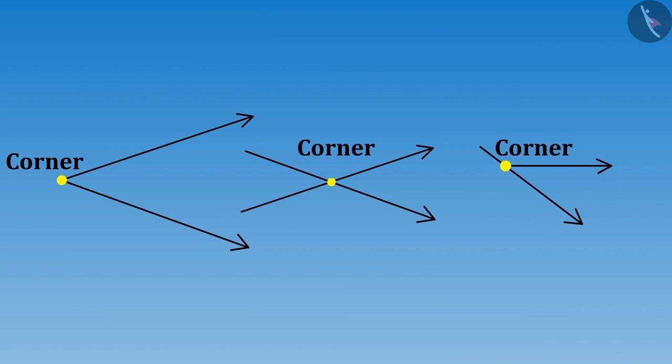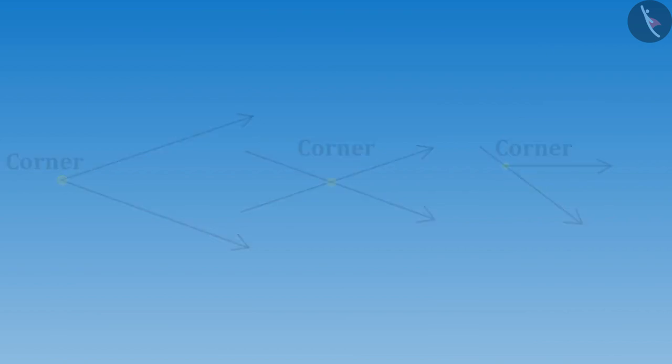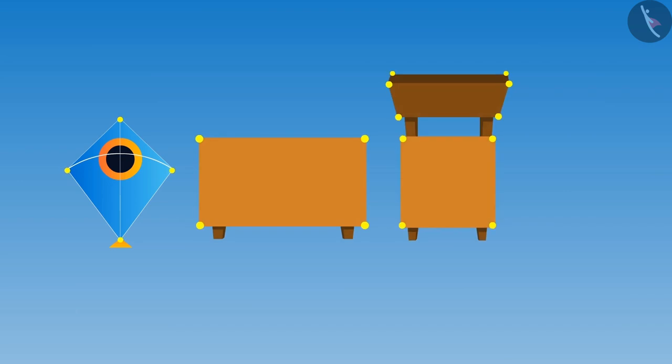So sister, does this mean that corners are only formed in objects like kite, table and a chair? And the shapes of jalebi and plate do not have corners?